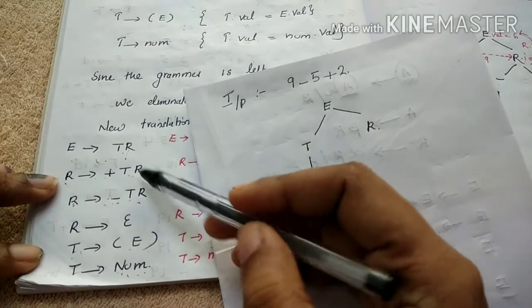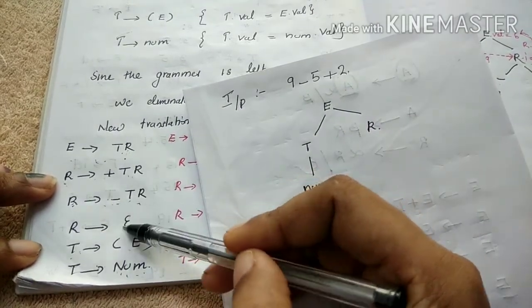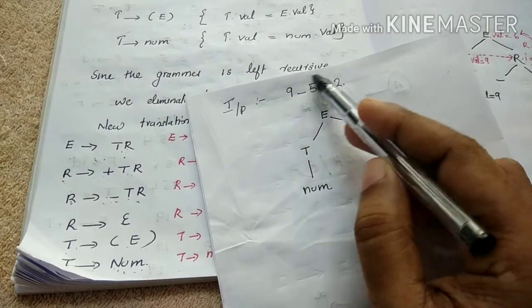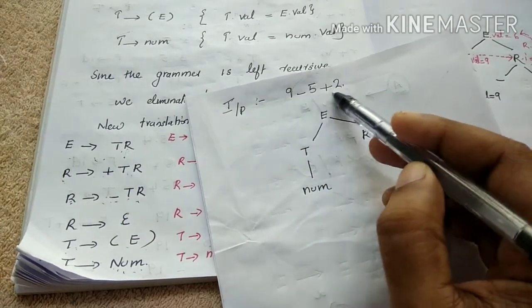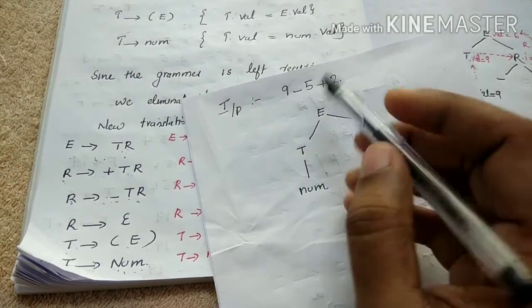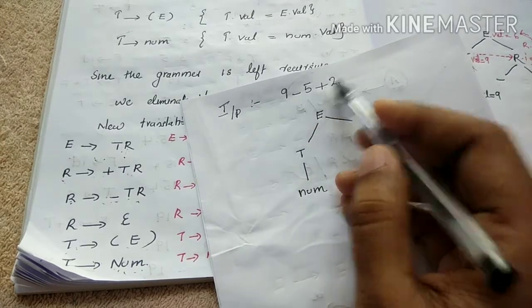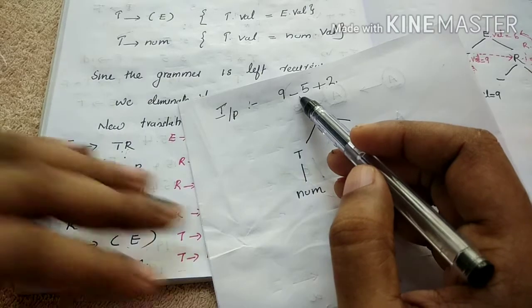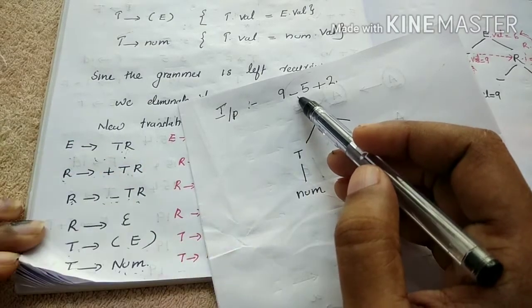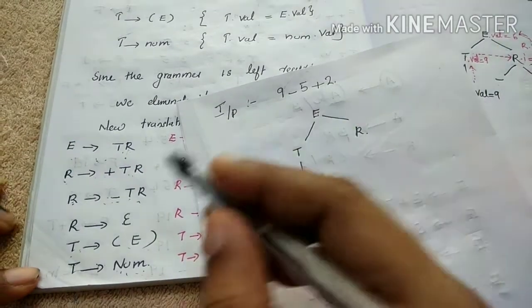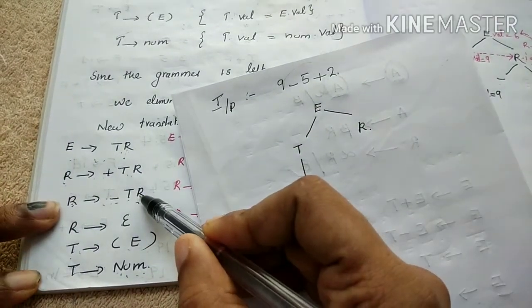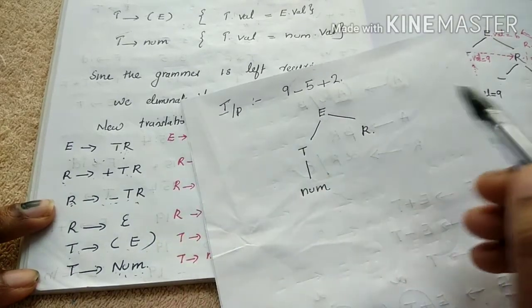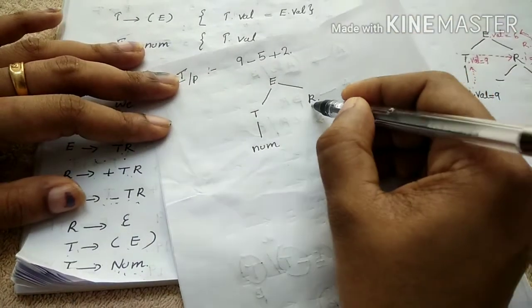So there are two expressions: plus T-R and minus T-R, and epsilon. We have R in the other portion. For example, the expression minus 5 plus 2. The first operator is minus. So minus is the term. Here we use this expression: R equals minus T-R, so it is like reducing.